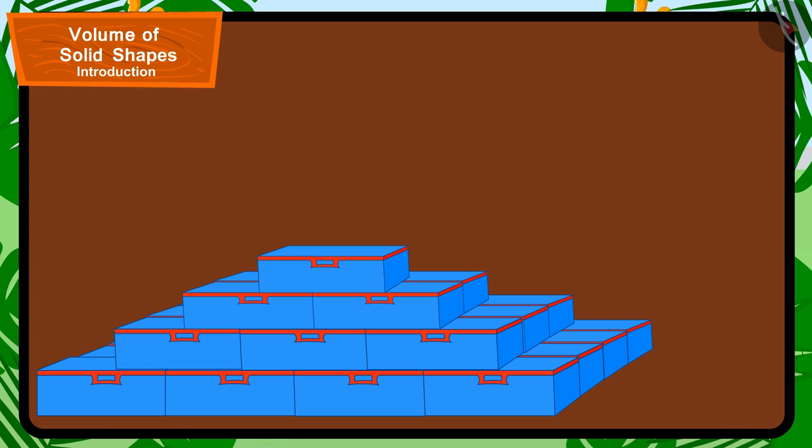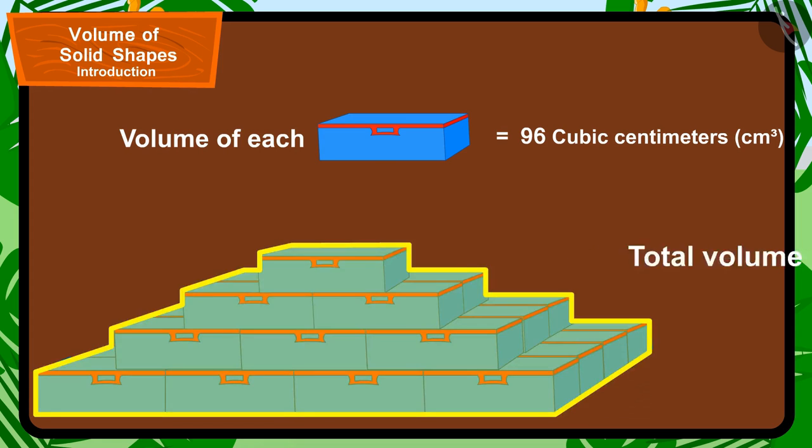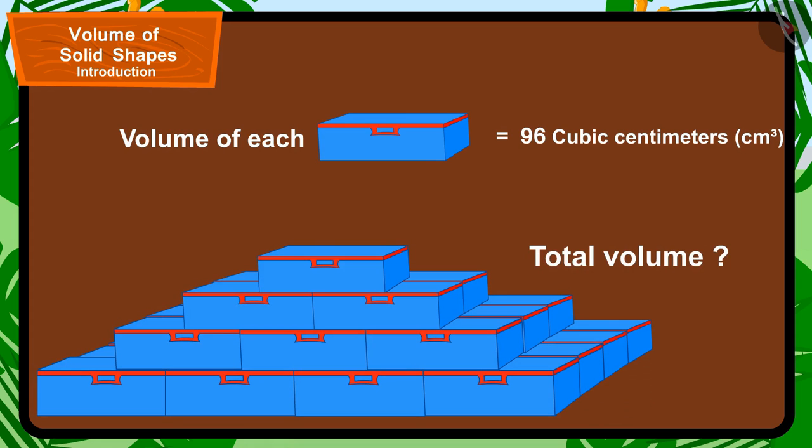Children, if the volume of each compass box is equal to 96 cm³, can you find out how many cm³ will be the total volume of all compass boxes being used in this shape? If you want, you can stop the video and find the answer.